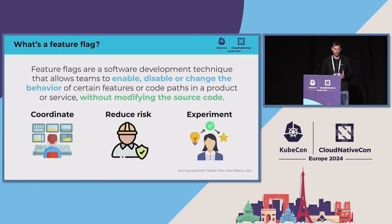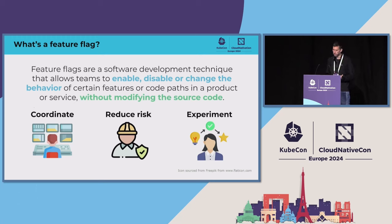Feature flags allow you to decouple feature releases from deployments, and they allow teams to coordinate feature releases on their schedule. Progressively enabling a feature flag allows you to reduce risk by tightly controlling the impact radius. They also allow you to quickly abort a failed deployment by basically instantaneously allowing you to revert the change.